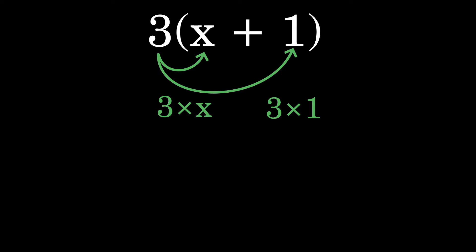which we can multiply individually to each term inside of the parentheses. Isn't that nifty? Our result is then simply 3 times x plus 3. But why does this work?